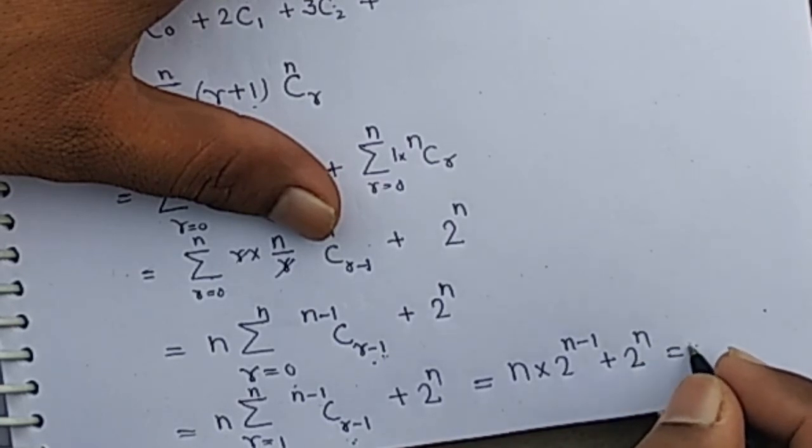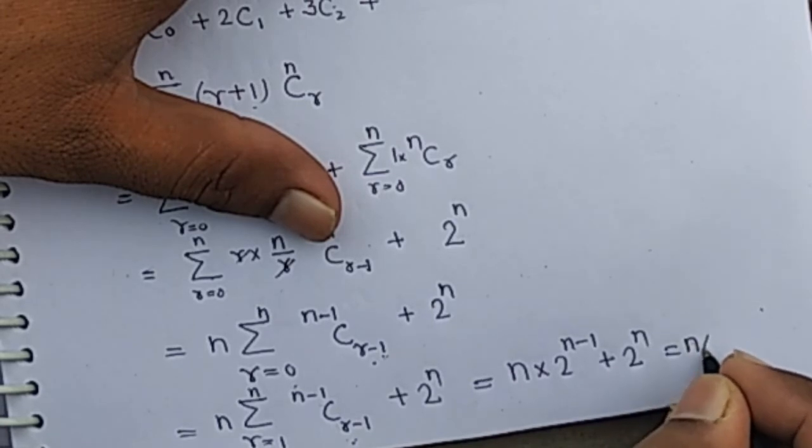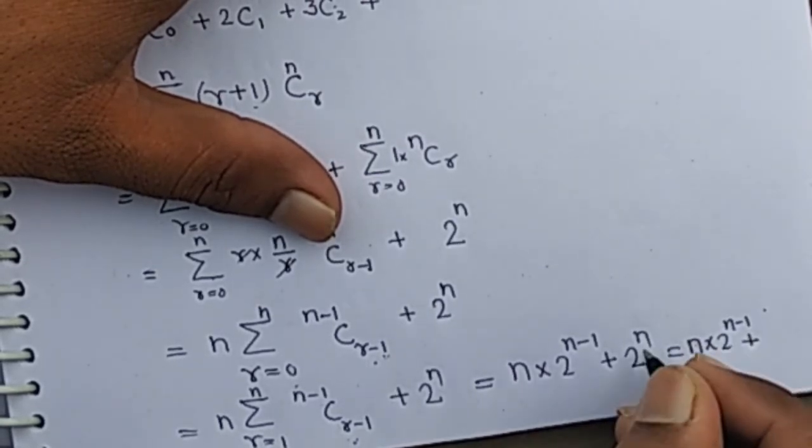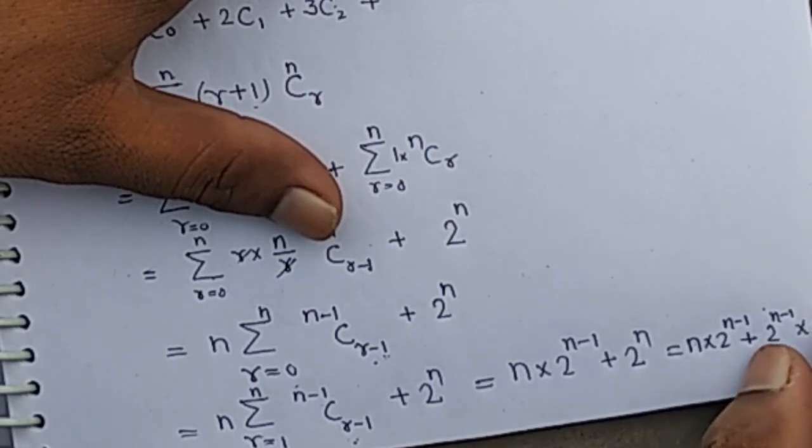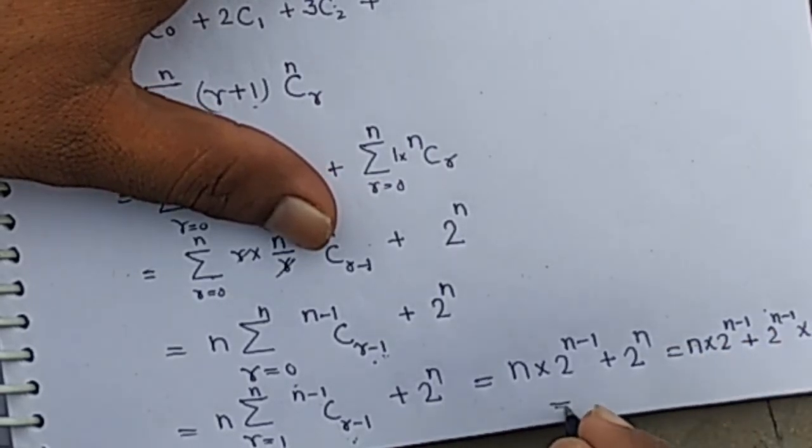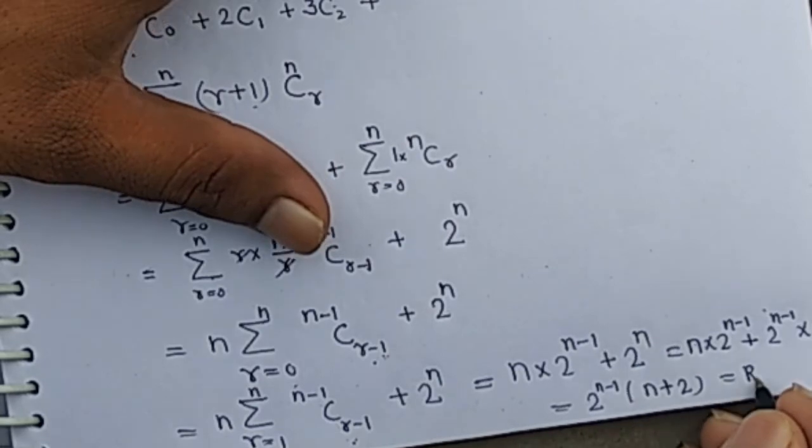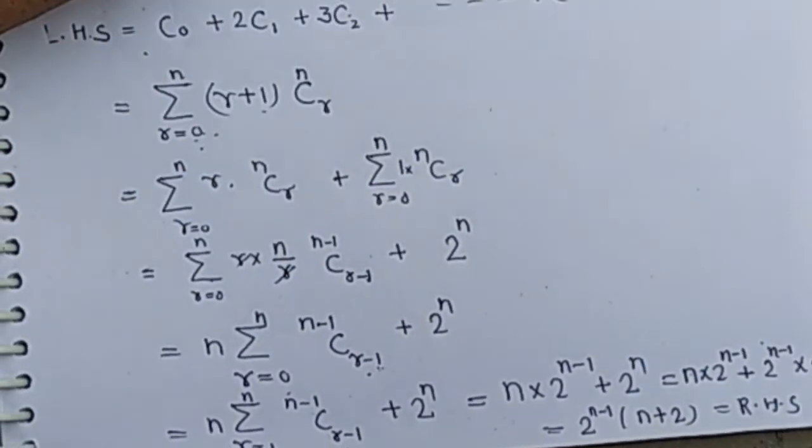Now it can be written as n into 2 to the power n minus 1 plus 2 to the power n minus 1 times 2. Take 2 to the power n minus 1 common. In bracket we have n plus 2, and it is our RHS. Hence proved.